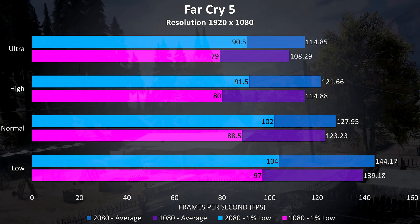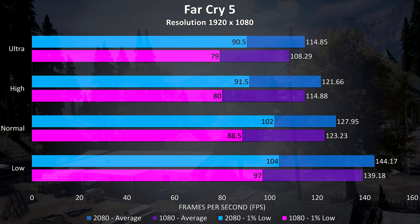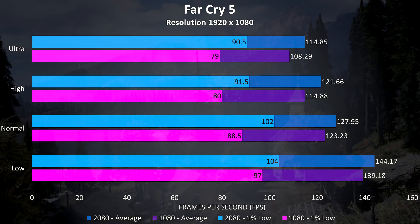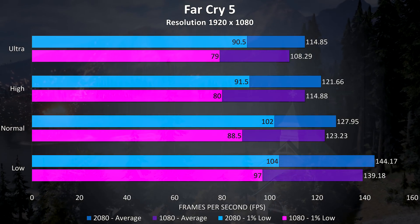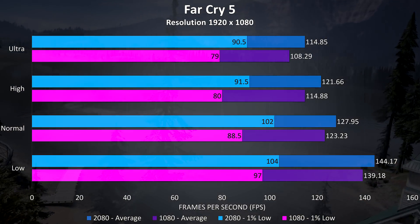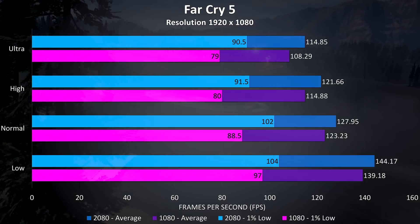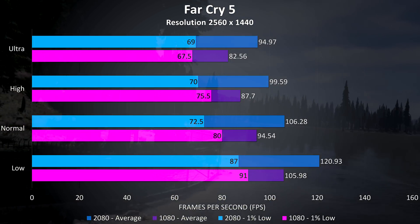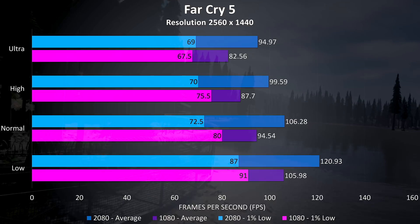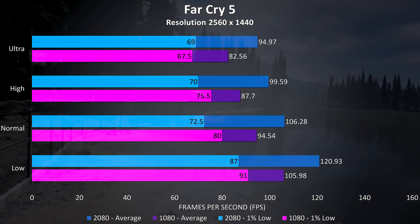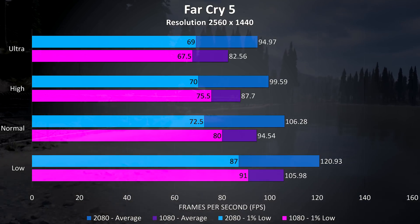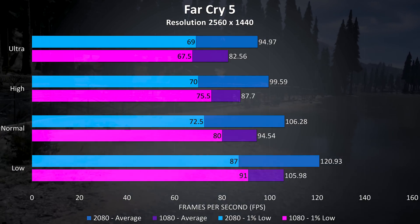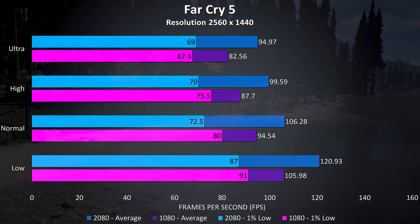Far Cry 5 was also tested using the built-in benchmark. At 1080p with ultra settings the 2080 was 6% ahead of the 1080, though a larger 14% higher 1% low was seen here. Going up to 1440p only saw a slightly higher 1% low at ultra, while I actually had lower results at the lower setting levels, and at ultra settings the average frame rate from the 2080 was now 15% ahead of the 1080.